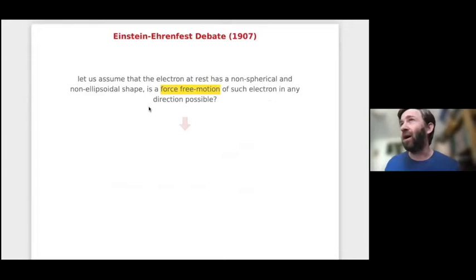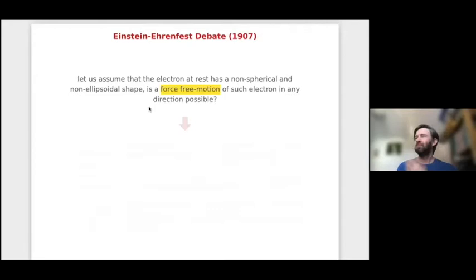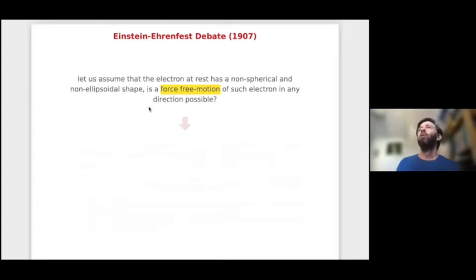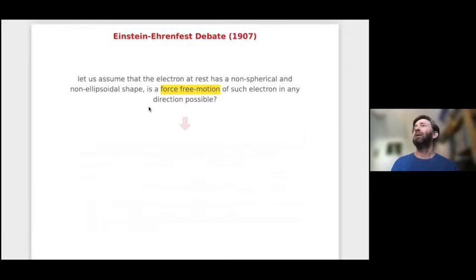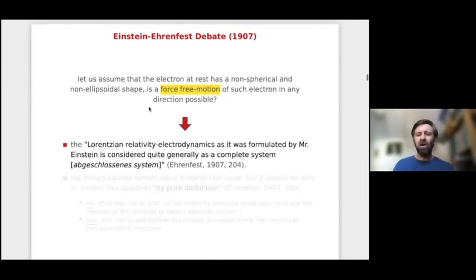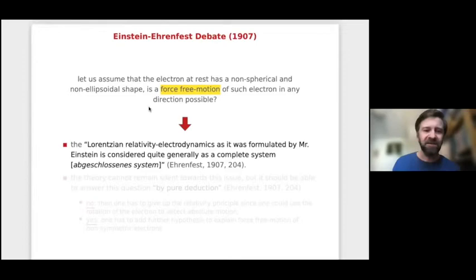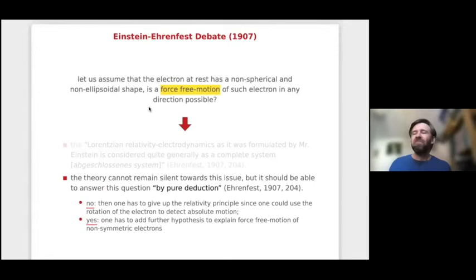People were not very satisfied. Ehrenfest, a great physicist who would soon become a great friend of Einstein, argued that you do need at least one assumption about the form of the electron: a non-spherical charged rigid body in non-symmetric motion will be forced to rotate, as had already been claimed by Abraham, simply because the components of velocity are not parallel to the momentum. So you need to assume the electron is at least symmetric. Lorentzian electrodynamics as formulated by Einstein — starting from special relativity — is considered a complete system, and the theory cannot remain silent about the structure of the electron.